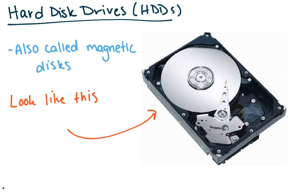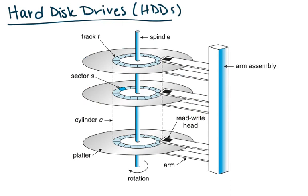Hard disk drives, or HDDs, are also called magnetic disks because they use magnetic patterns to store information. They look like this — there's an arm here, and these are the platters. This arm moves over the platters to read the information stored at each individual spot.